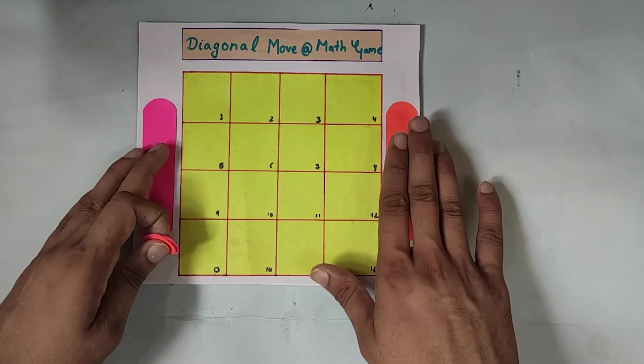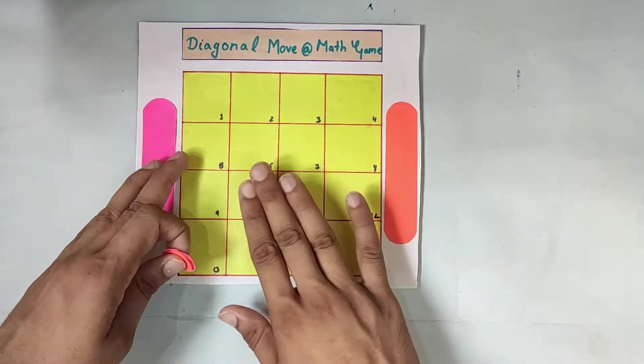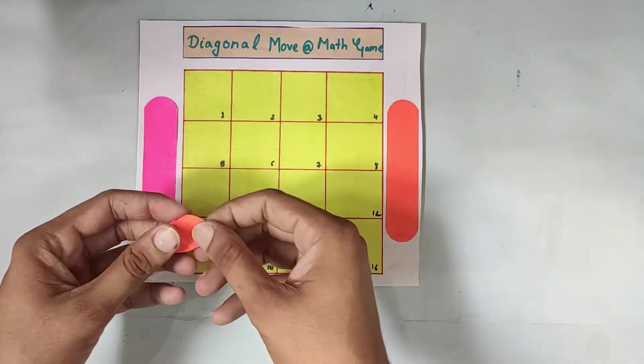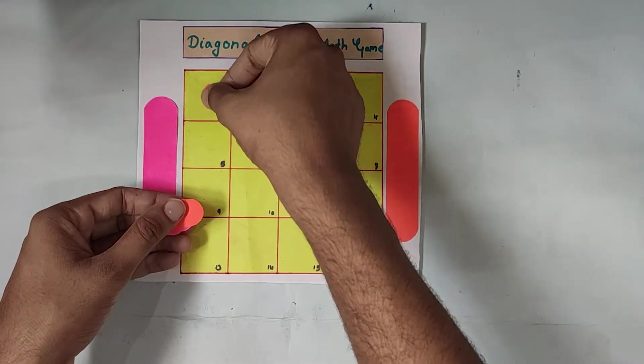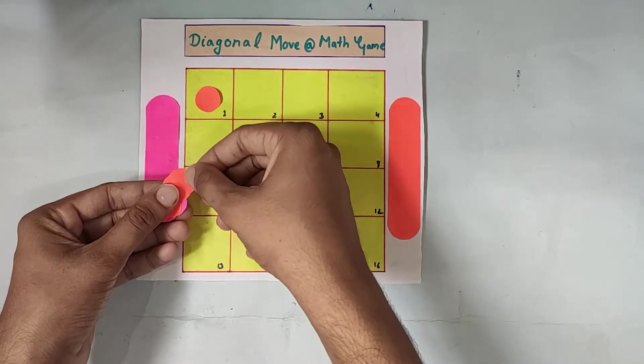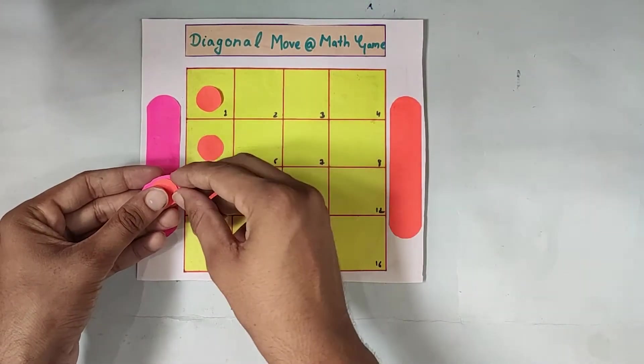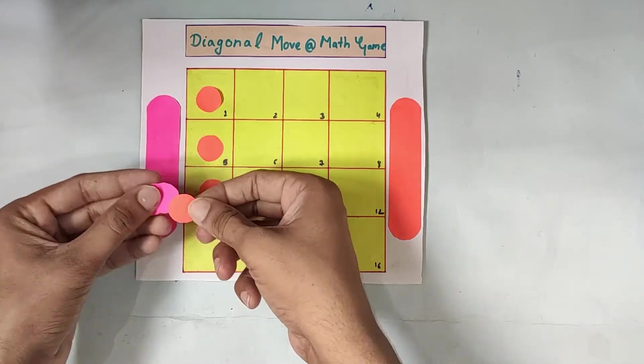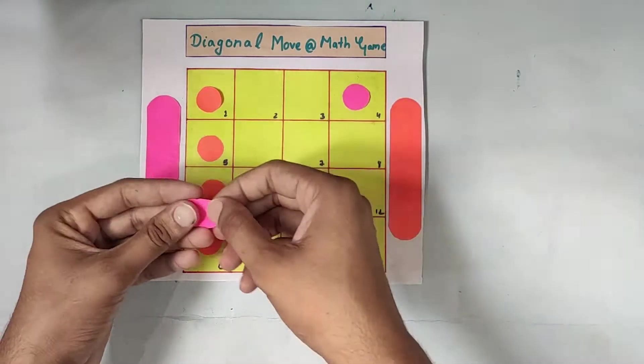And you have to place them in such a manner that the orange circles are opposite to this orange strip. You have to place them in this manner. The orange circles should be here, and the pink circles should be here.